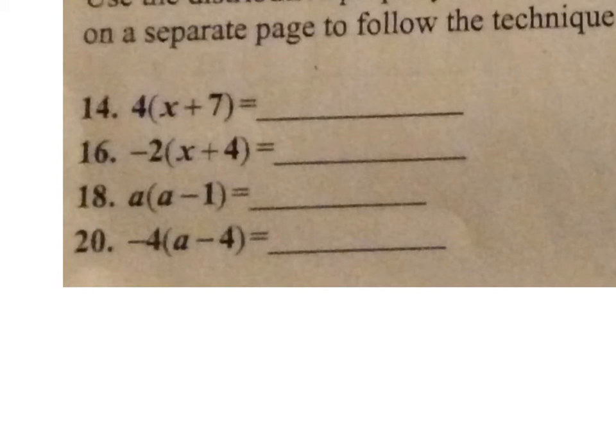So the first one is 4 times x plus 7. So 4 times x and 4 times 7. So it would be 4x plus 28. Negative 2 times x plus negative 2 times 4. This is tricky because we have a negative. So this means that it would be negative 2x and then negative 2 times 4 is actually going to be negative 8. So we can change this to minus 8.